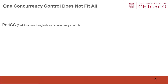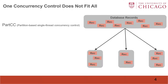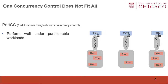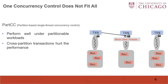Consider PartCC, a partition-based single-thread concurrency control. It partitions the database records and assigns each partition a working thread and a partition lock. If transactions only access records within one partition, it only needs to obtain the partition lock and execute without any more concurrency control. However, if transactions need to access records in a remote partition, it needs to request the remote partition lock, which can block other threads. Therefore, cross-partition transactions can hurt performance.